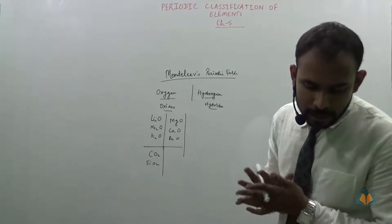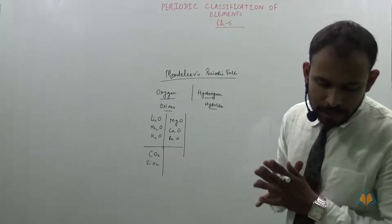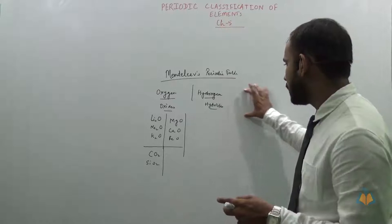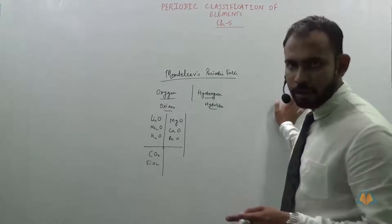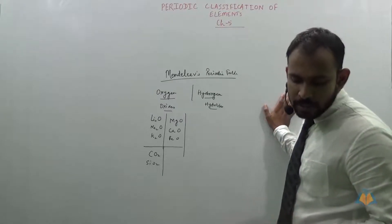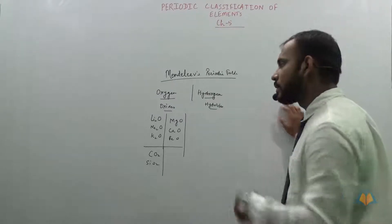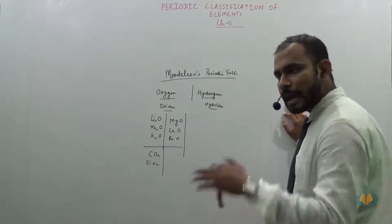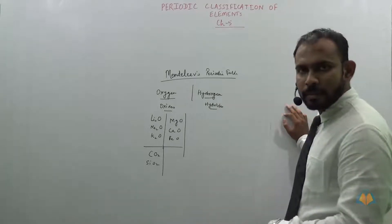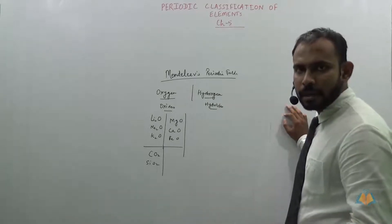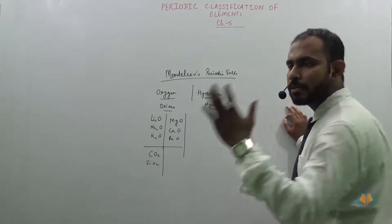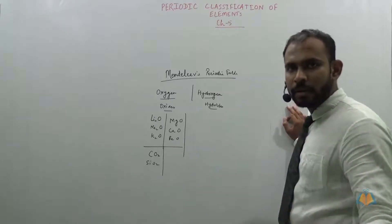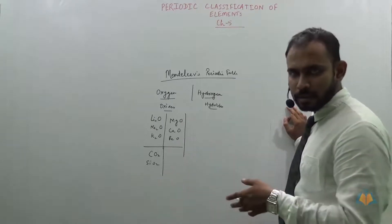When elements are arranged in increasing atomic masses, the elements with similar properties will come at regular intervals by themselves — we don't decide whether it will be at the eighth or third position or any such thing; it just comes by itself.